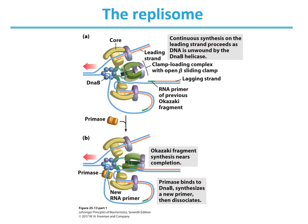The replisome coordinates DNA synthesis on the leading and lagging strands. Events at the replication fork are coordinated by a single DNA polymerase 3 dimer in an integrated complex with DnaB helicase. The lagging strand is looped so that DNA synthesis proceeds steadily on both leading and lagging strand templates simultaneously. Okazaki fragments are synthesized on the lagging strand. RNA primers are removed by DNA polymerase 1 or RNase H1. DNA polymerase 1 fills in the gap and DNA ligase seals the backbone.